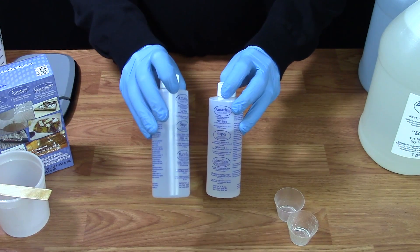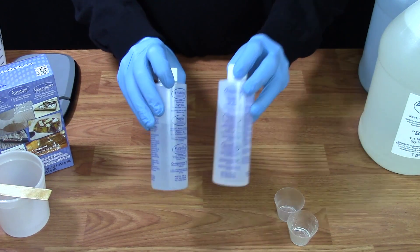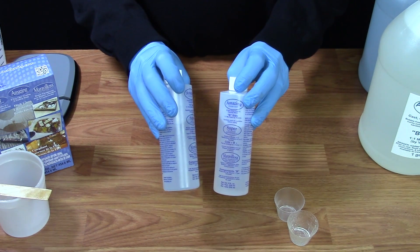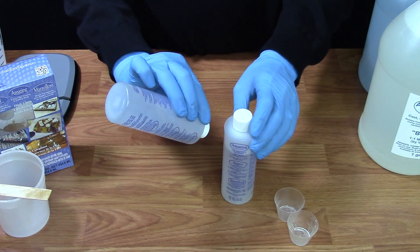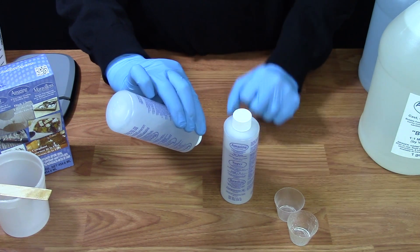You'll also find that the A side of the Amazing ClearCast is a lot thicker than the B side. So if you're emptying the entire bottles, make sure you give more time for the A side to drain out completely versus the B side. You always want to make sure you stay on that one-to-one mix ratio by volume.